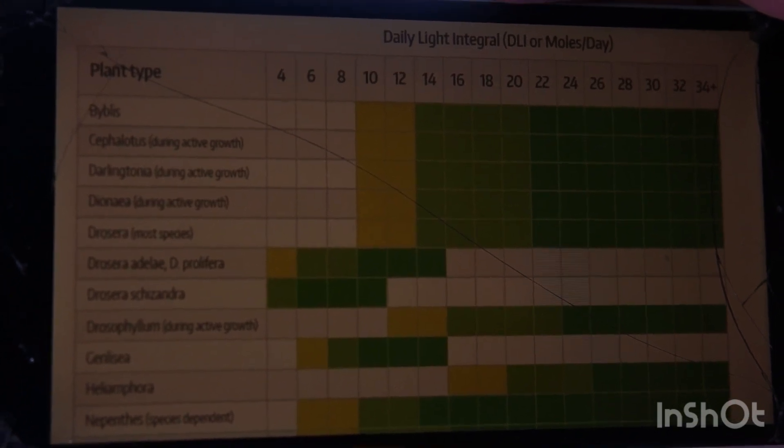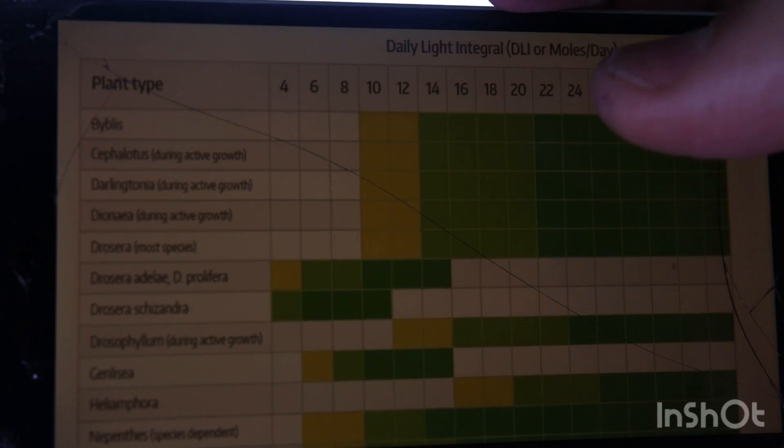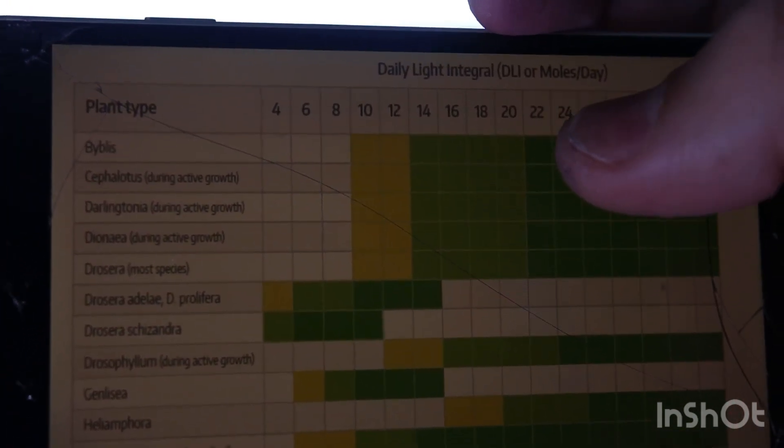I have a chart here showing the recommended light intensities for Dionaea muscipula in active growth. So what we're aiming for is the dark green which is 22 and up. So how do we get the value?